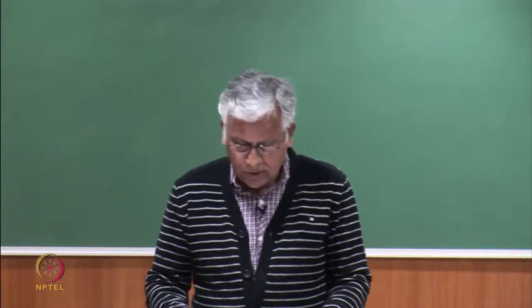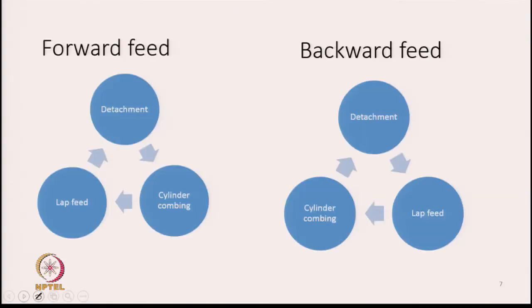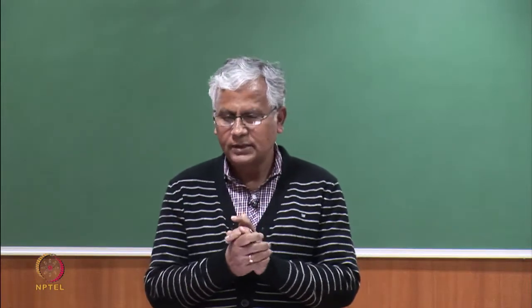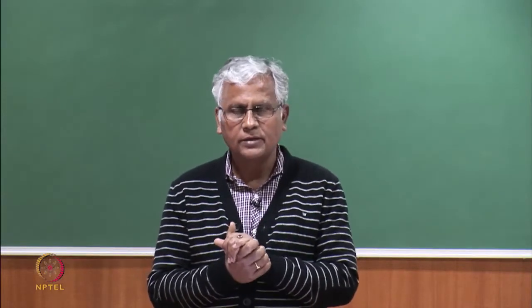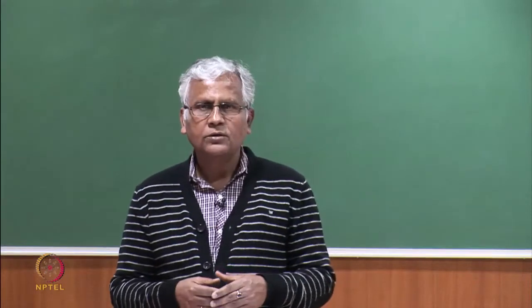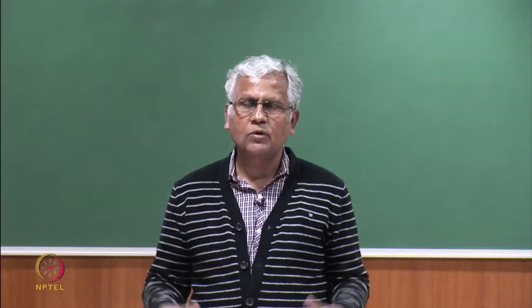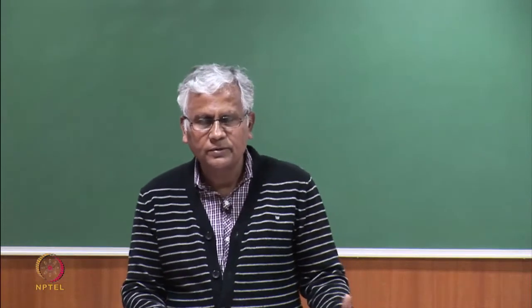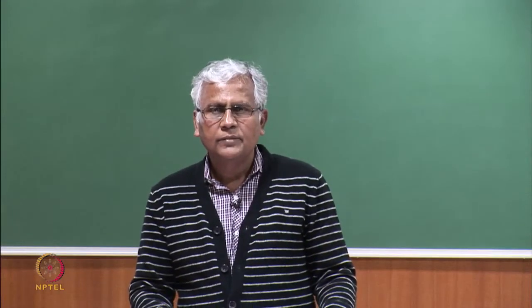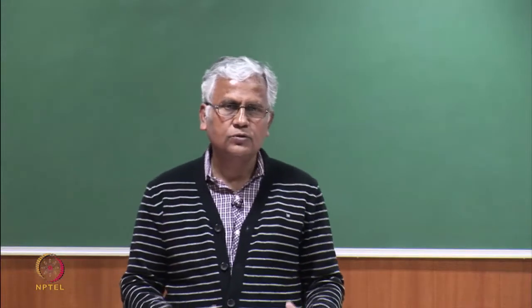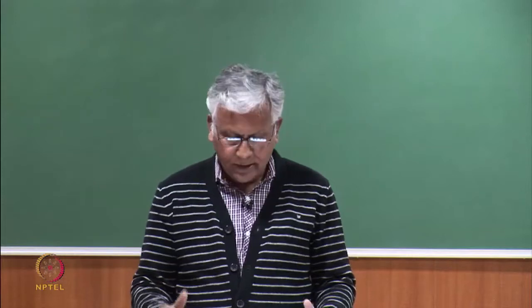Now we move to the concept of boundary length. Combing is basically a fibre sorting machine — it segregates long fibres from shorter ones. That is the basic purpose of the combing process. Additional advantages include opening fibres, separating them, and removing neps and impurities still left in the lap. But the machine is primarily designed to segregate fibres into two groups.